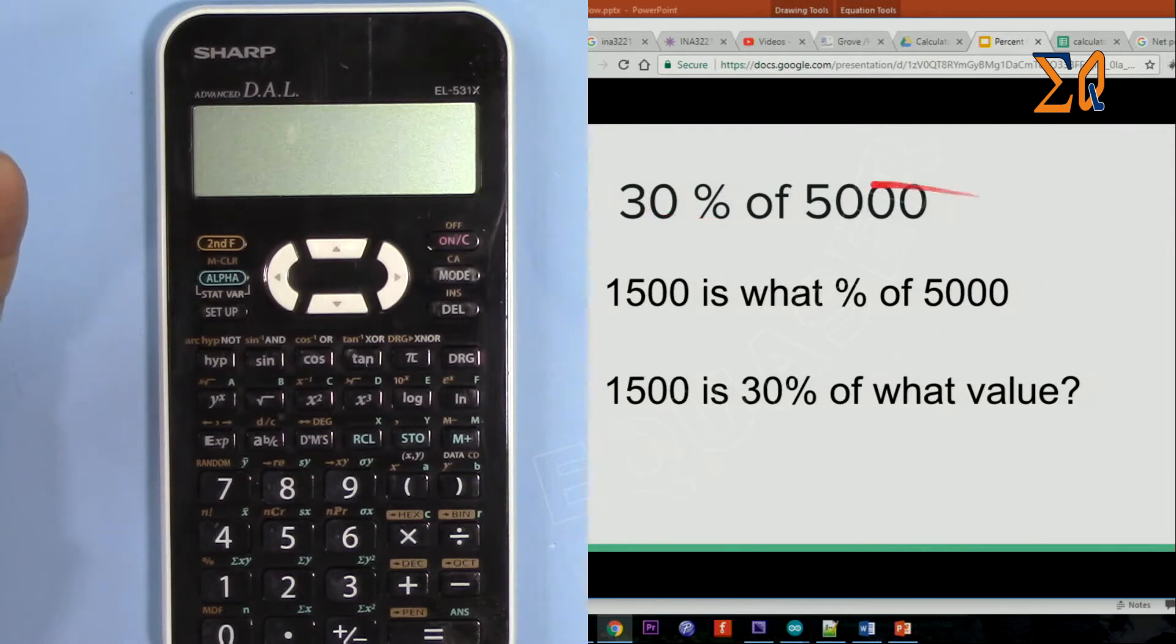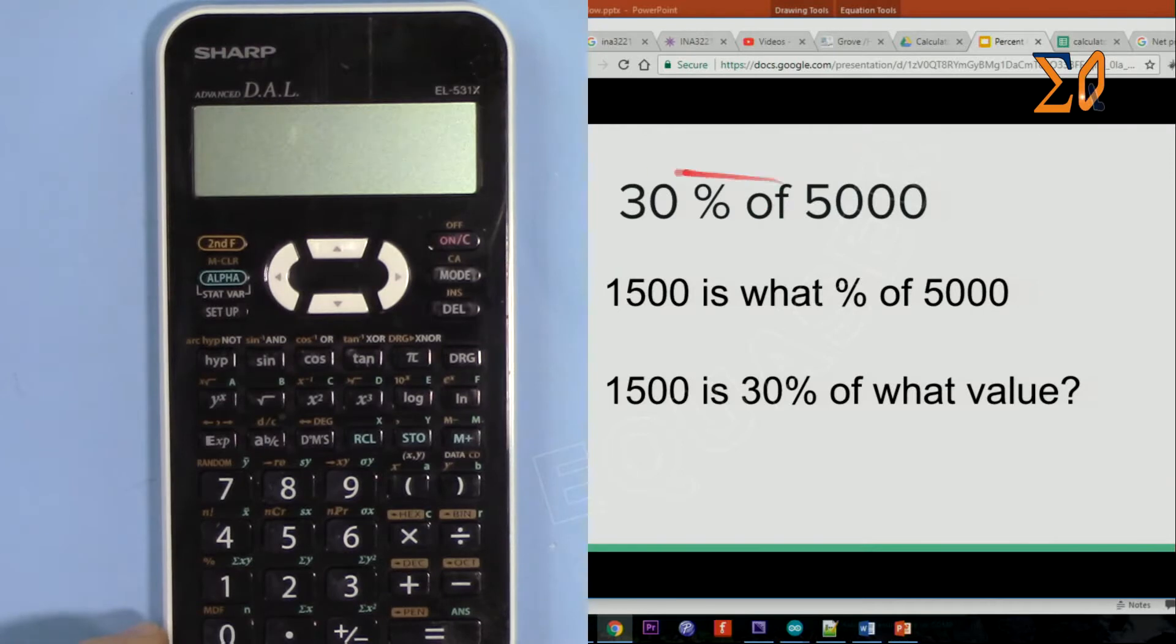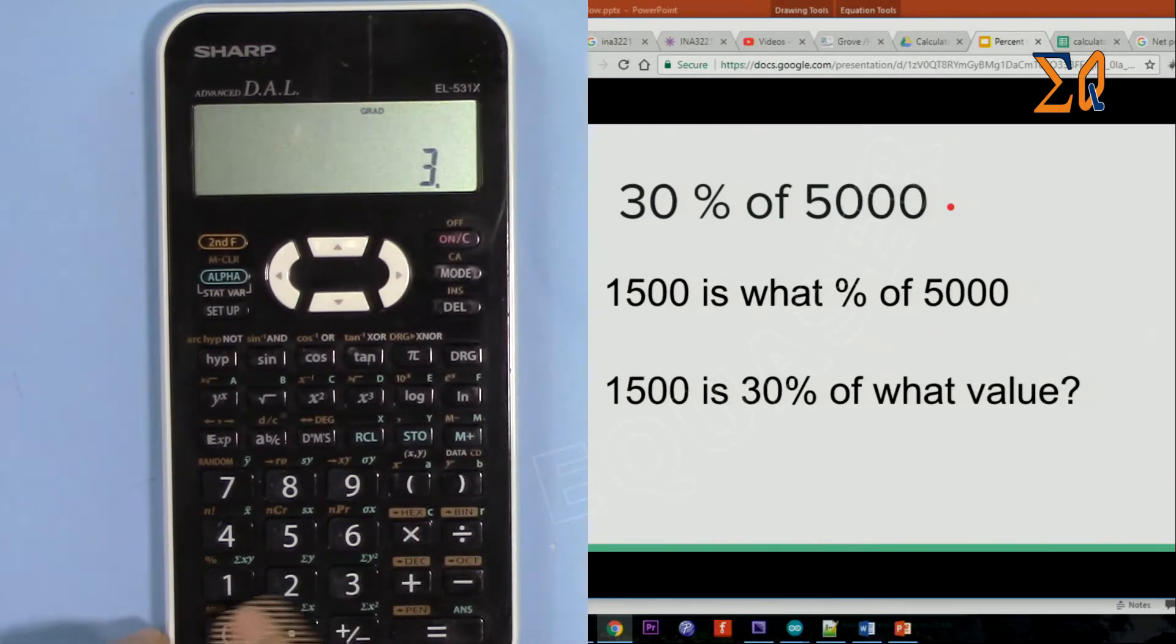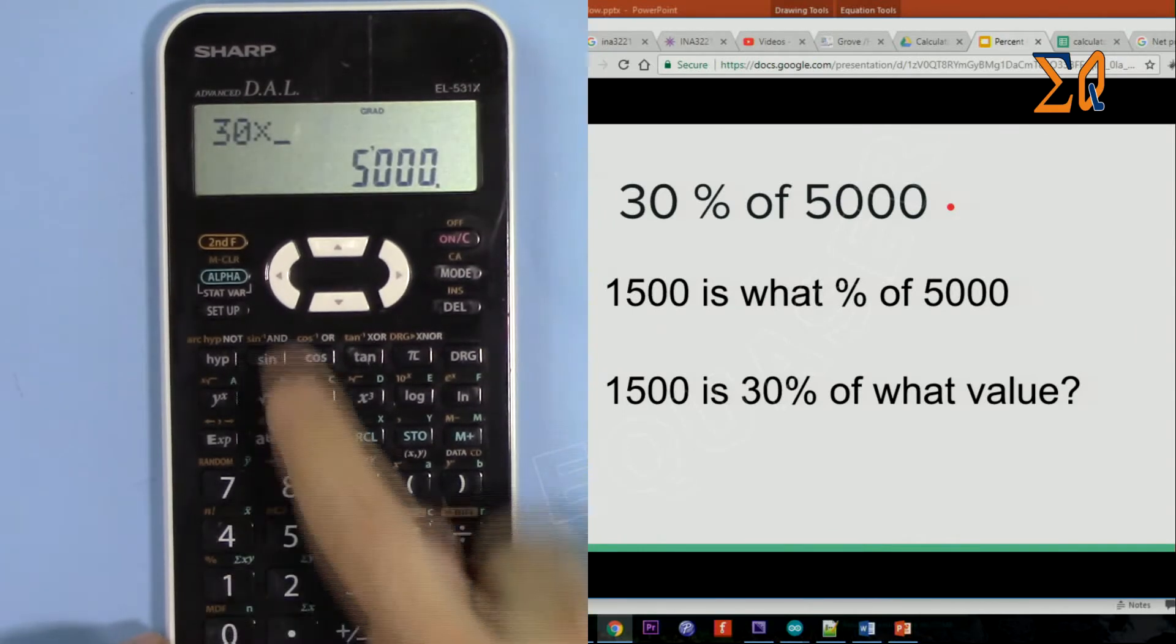The first one will be done automatically by the majority of calculators, but for the other ones we need to have a trick. So let's solve the first one: 30 times 5000, and then second function and then one.